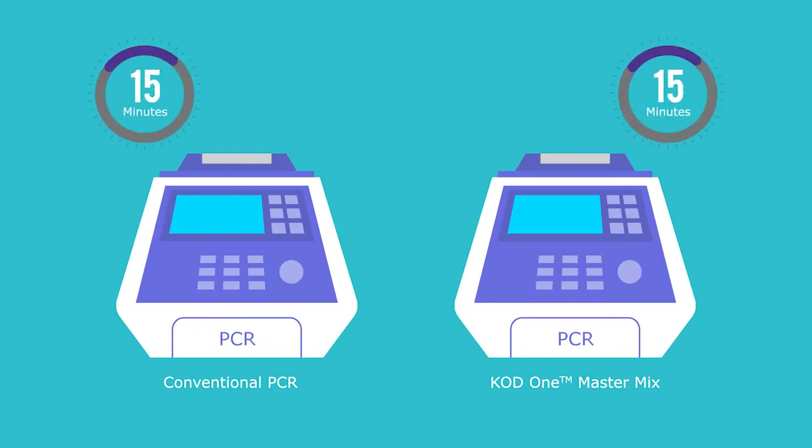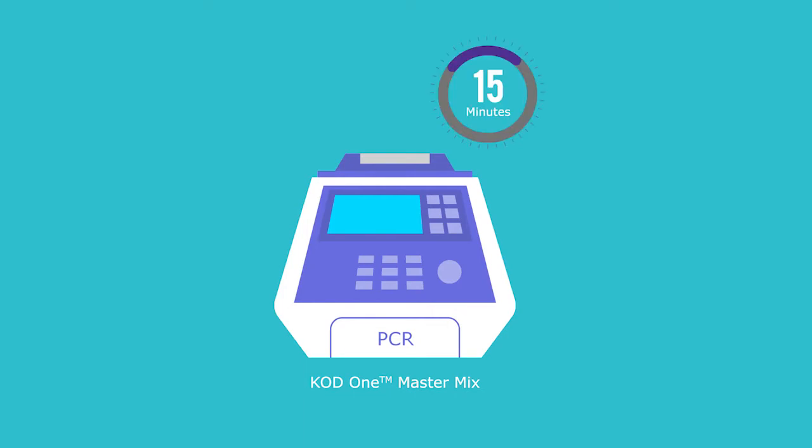While a typical conventional PCR assay can take anywhere from 33 to 42 minutes, an ultra-fast PCR assay using KOD1 PCR MasterMix can be completed in less than 15 minutes.